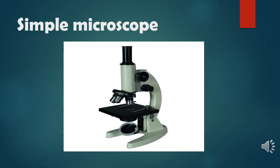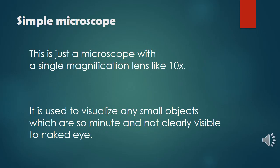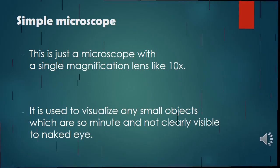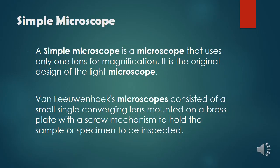The simple microscope is just a microscope with a single magnification lens, like 10 times. It is used to visualize small objects which are minute and not clearly visible to the naked eye. A simple microscope uses only one lens for magnification and is the original design of the light microscope.